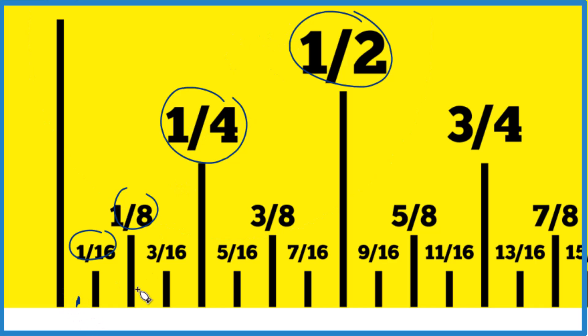We have 7/32nds. So let's divide these up into 32nds here, and we'll go 1, 2, 3, 4, 5, 6, 7. So right here, that's 7/32nds of an inch on our ruler or our tape measure.